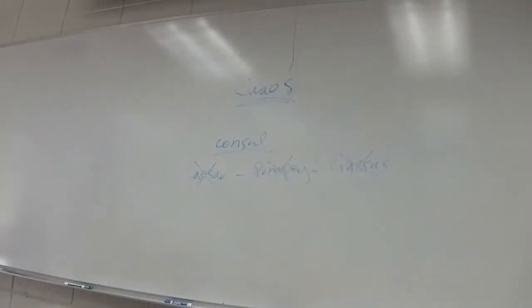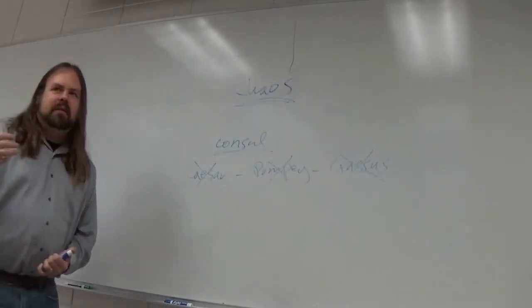So finally, Octavian is the last man standing, changes his name to Augustus, becomes emperor of Rome.